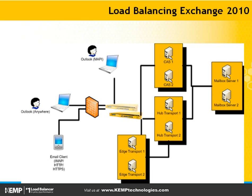The load balancer can also distribute SMTP traffic across multiple hub transport servers. This can be important if you have, for example, multifunctional devices or application servers relaying SMTP traffic. When you have edge transport servers and hub transport servers, you have to be aware there is an internal round robin distribution mechanism between the two.